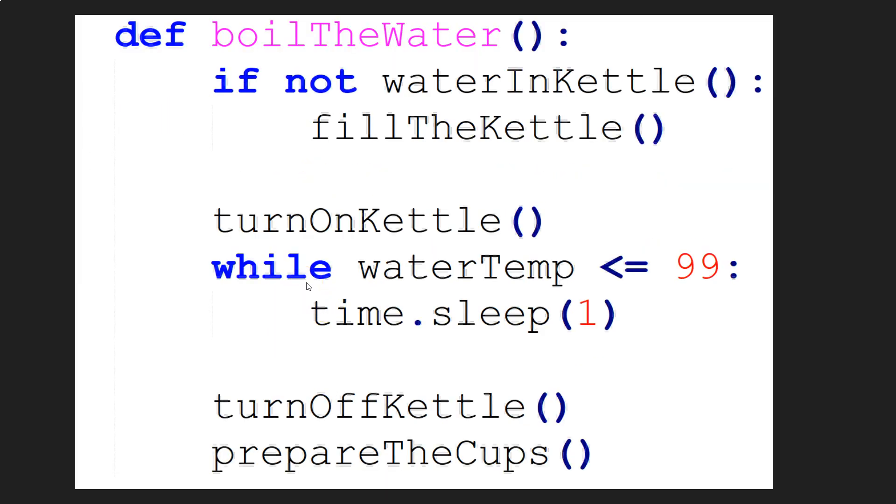And then if we go through to the next level, well, we'd have a bit here where we boil the water, we can check to see if there is water in the kettle. And if there isn't, we just call the fill the kettle function, which would be the next step down. And then after that's done or if it doesn't need to be done, then you'd turn on the kettle, wait until the water gets to the right temperature, and then you'd move on to the next function here, the turn off the kettle, prepare the cups, and then you just pass it on through the process.